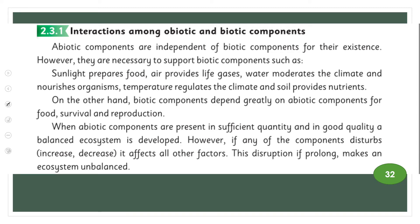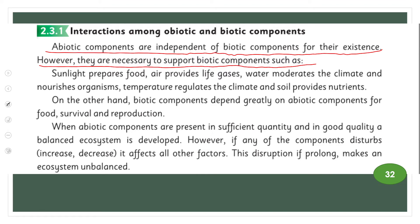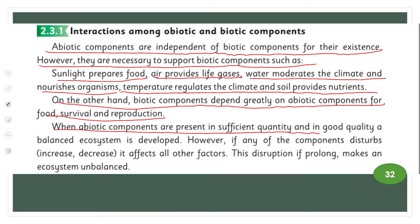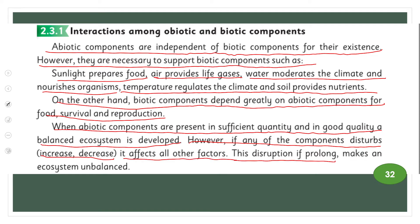Abiotic components are independent of biotic components for their existence. However, they are necessary to support biotic components: sunlight prepares food, air provides life gases, water moderates the climate and nourishes organisms, temperature regulates the climate, and soil provides nutrients. On the other hand, biotic components depend greatly on abiotic components for food, survival, and reproduction. When abiotic components are present in sufficient quantity and in good quality, a balanced ecosystem is developed. However, if any of the components is disturbed — increases or decreases — it affects all other factors, and prolonged disruption makes an ecosystem unbalanced.